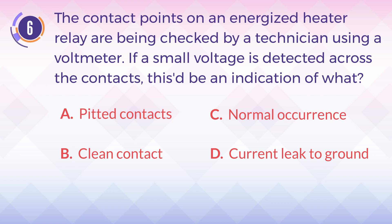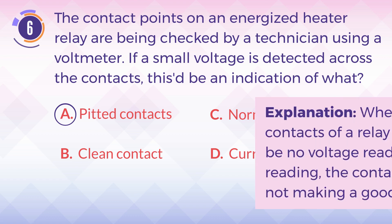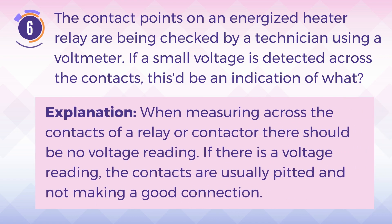The answer is A, pitted contacts. Explanation: When measuring across the contacts of a relay or contactor, there should be no voltage reading. If there is a voltage reading, the contacts are usually pitted and not making a good connection.